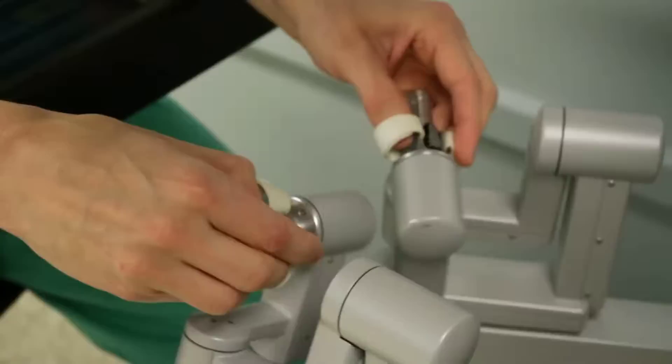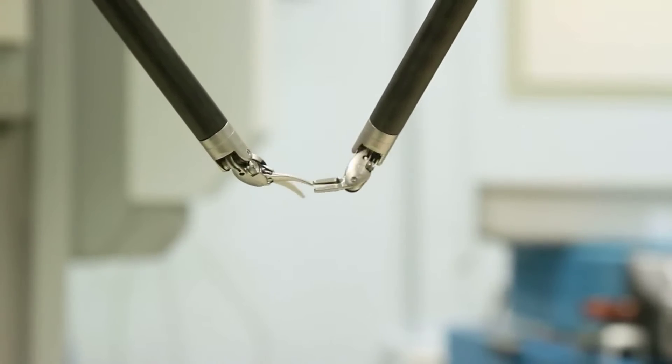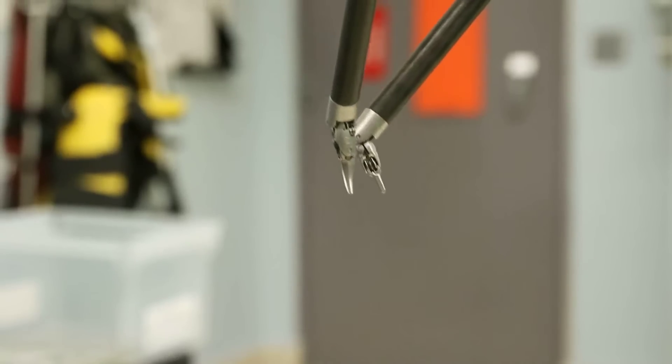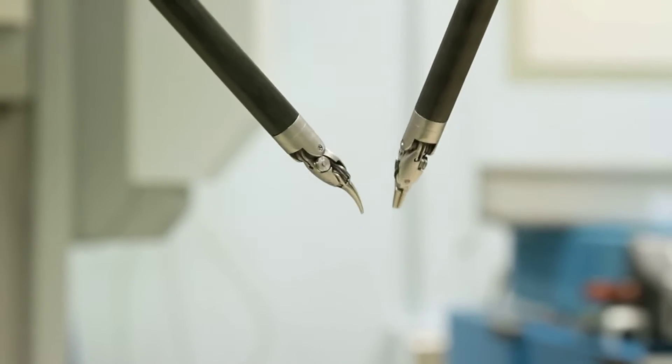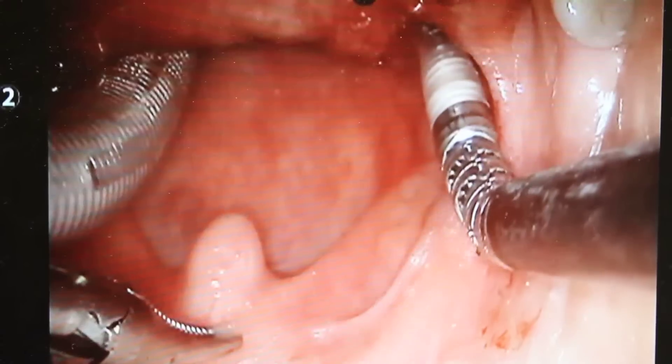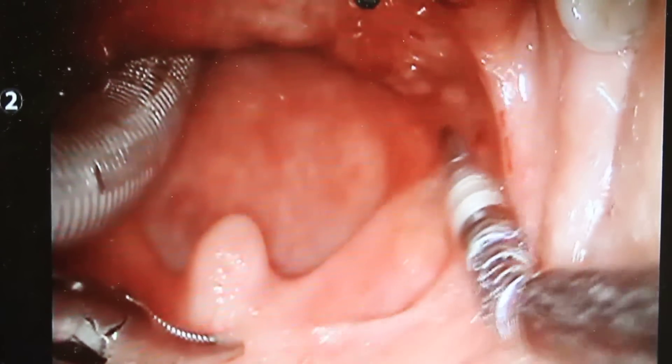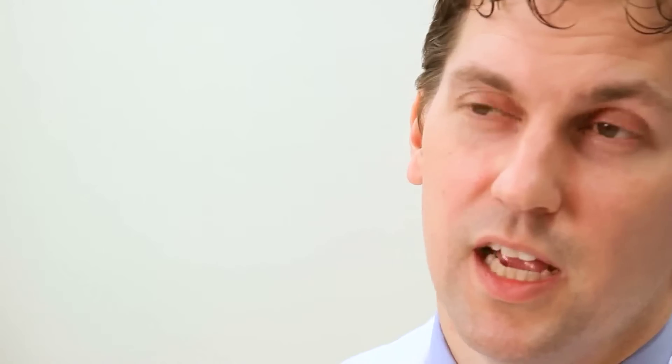When the camera is placed an inch and a half or two inches away from the tumor, the visualization and magnification that's provided are superb. You can really delineate the line between where tumor begins and normal tissue ends very clearly, and this allows for very safe and precise removal of the tumor in tight quarters of the mouth and throat that we weren't able to remove tumors from previously.